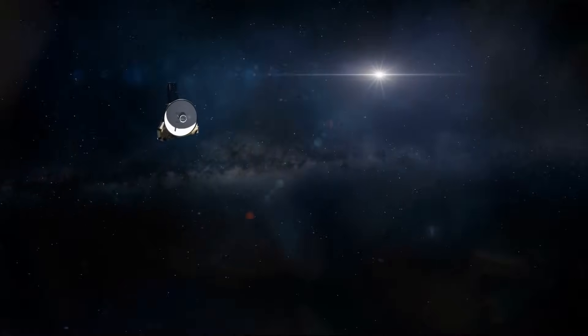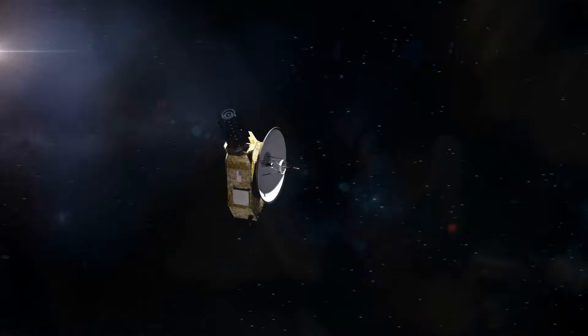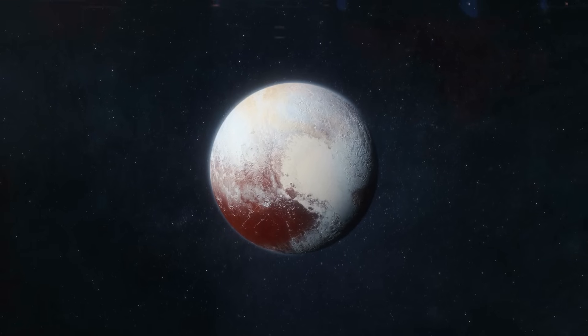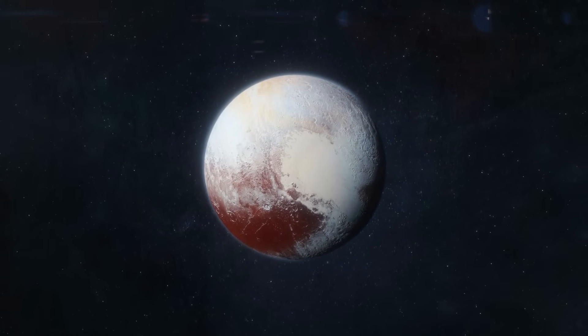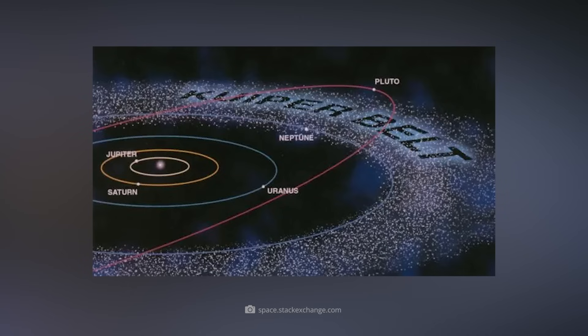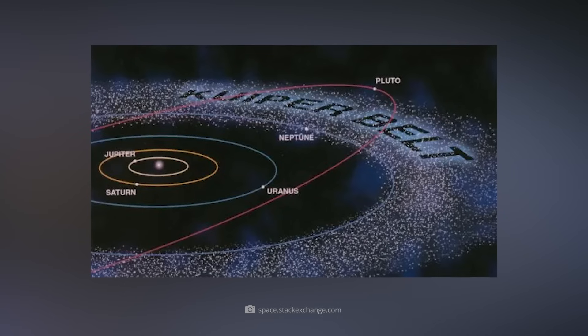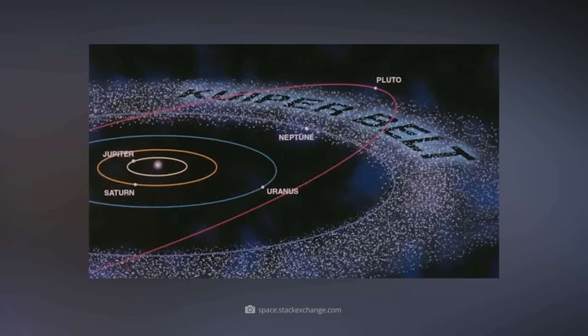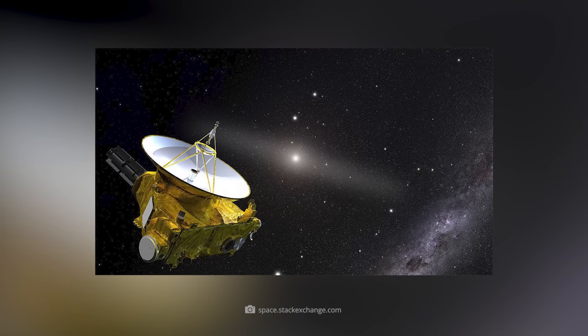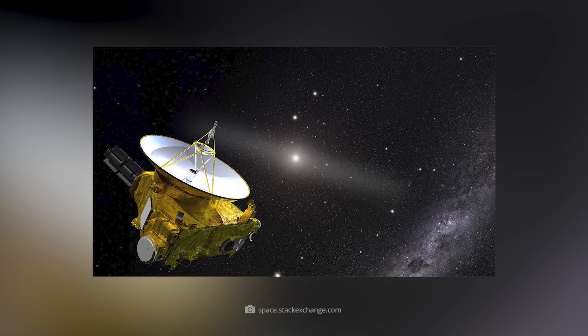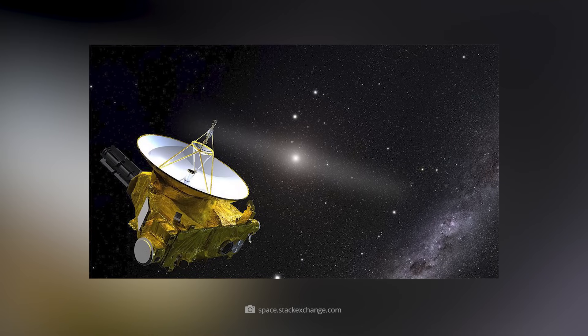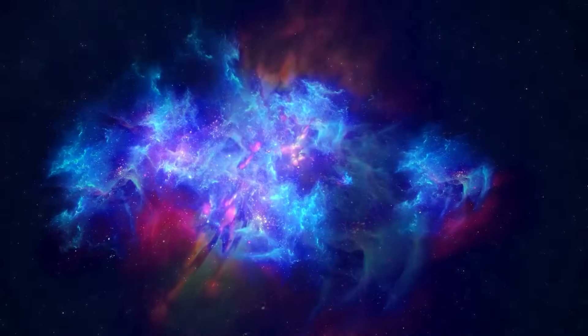A more recent probe on an interstellar course is New Horizons, which was launched in 2006 and delivered the first real images of Pluto in 2015. The probe is currently in the Kuiper belt and will reach the interstellar medium in the 2040s at the earliest. Although it's still flying within the heliosphere, New Horizons has already been tested for interstellar navigation.